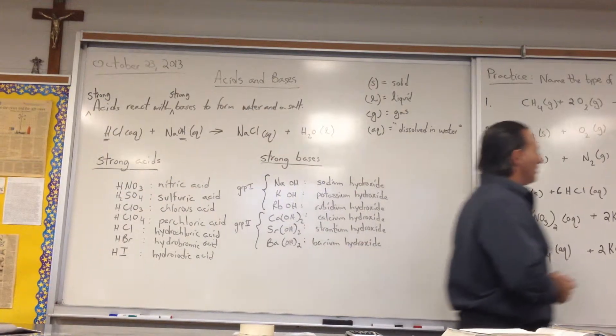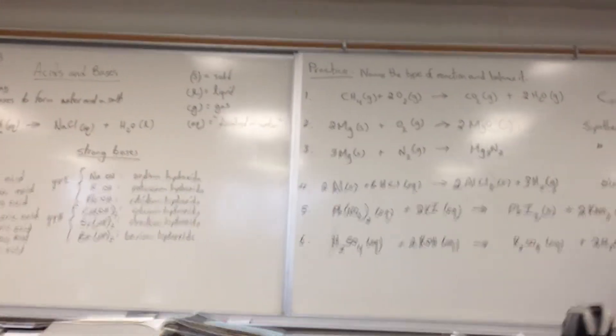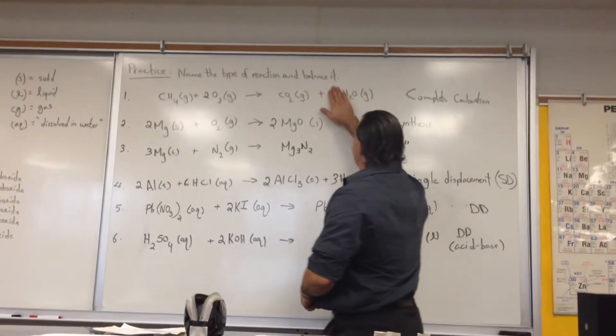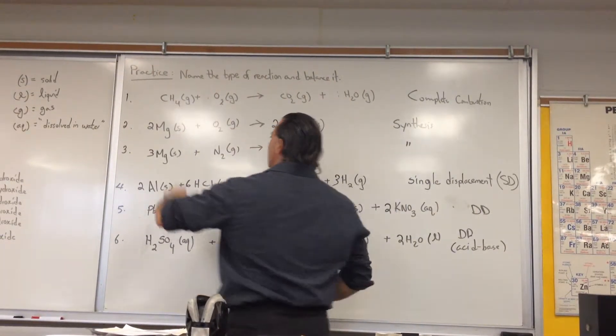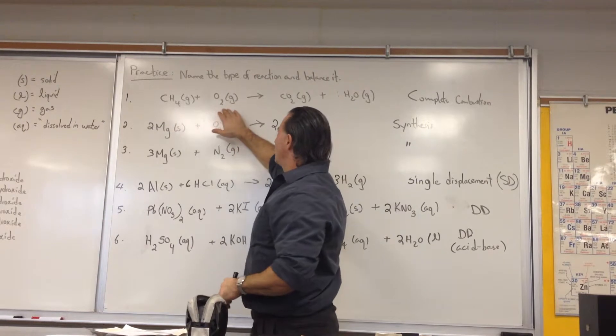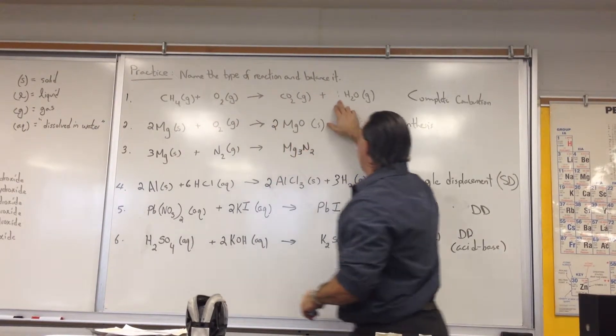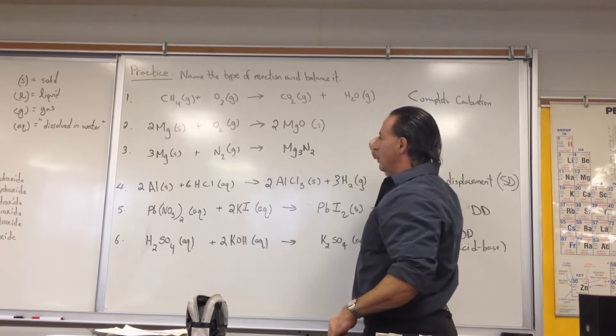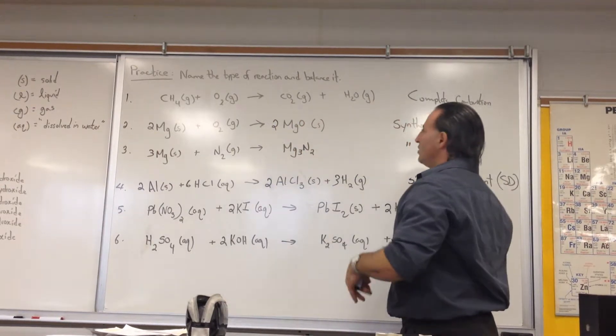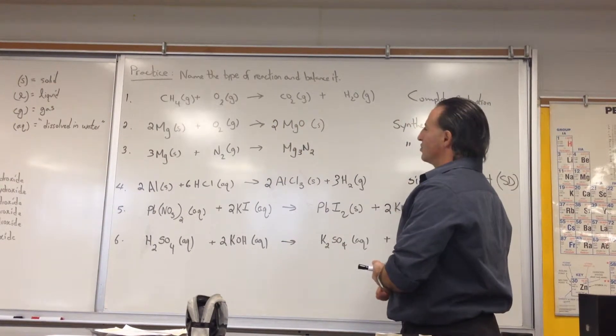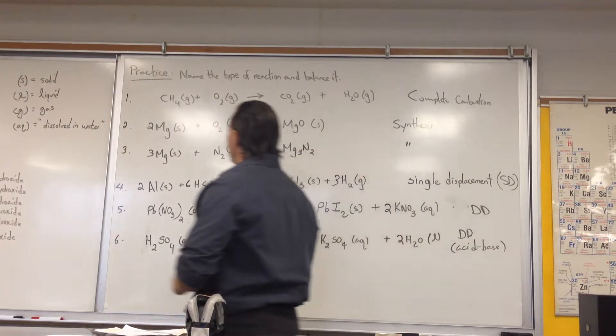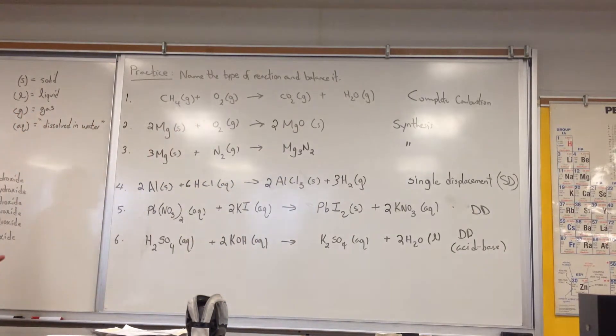Now for some practice on naming the reactions and balancing them. The first example I have is an example of a combustion reaction. You see I have methane reacting with oxygen, producing carbon dioxide and water. When you get only carbon dioxide and water as your products, it's a pretty good bet that you'll have a complete combustion reaction.